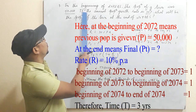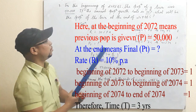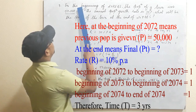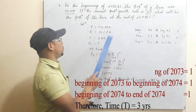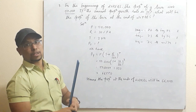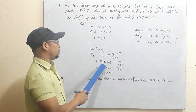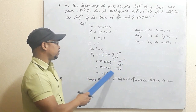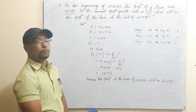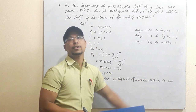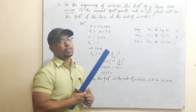The fifty thousand population is at the beginning of 2072, making it the previous population P. We need to calculate the population at the end of 2074, which is PT. Using PT equals P times (1 + R/100) to the power T, substituting the values, the population at the end of two thousand seventy-four will be sixty-six thousand five hundred and fifty.